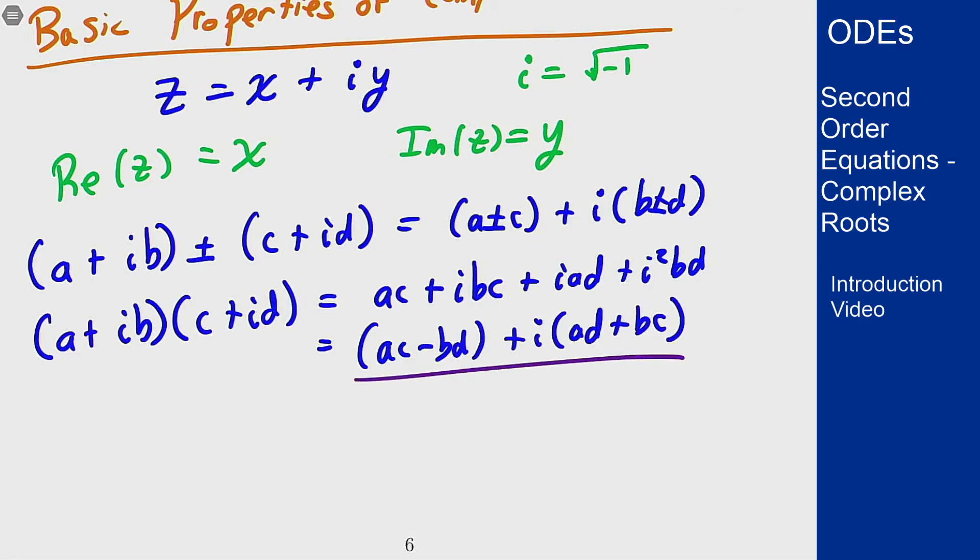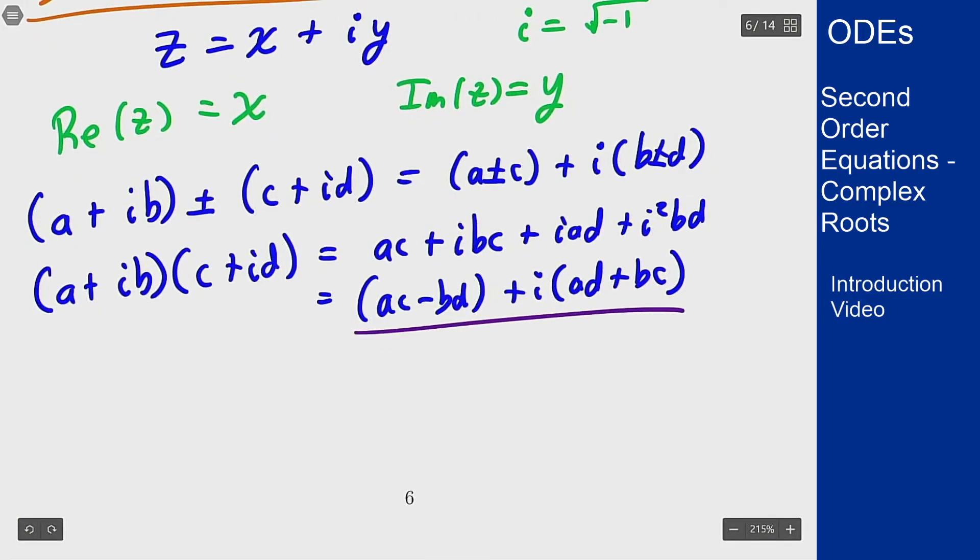For division we have to be more careful again. What we really need to think about is reciprocals, because if I want to divide two complex numbers, I want to multiply one by one over the other one. For complex numbers, division is tricky because I need to write 1/(a + ib) in terms of something + i times something. And we do that by multiplying by the conjugate.